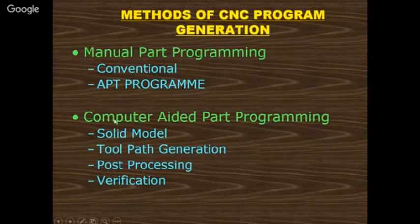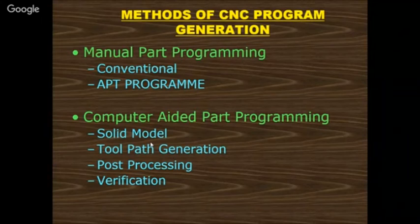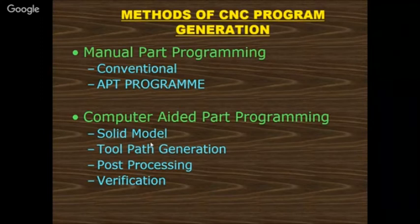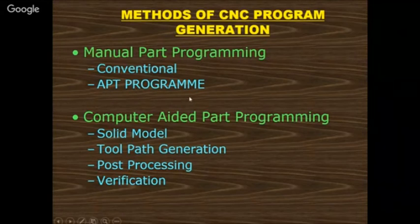Methods of CNC programs are manual part programming (conventional APT program) and computer part programming (using software: generate a solid model, apply machining parameters, cut materials, generate tool path). After getting tool path generation, the data is fed to the CNC machine. Post-processing is required to convert machine data to NC codes — G-codes and M-codes. Finally, verification allows you to see how much material is removed from the workpiece and how the tool cuts — everything is observable.